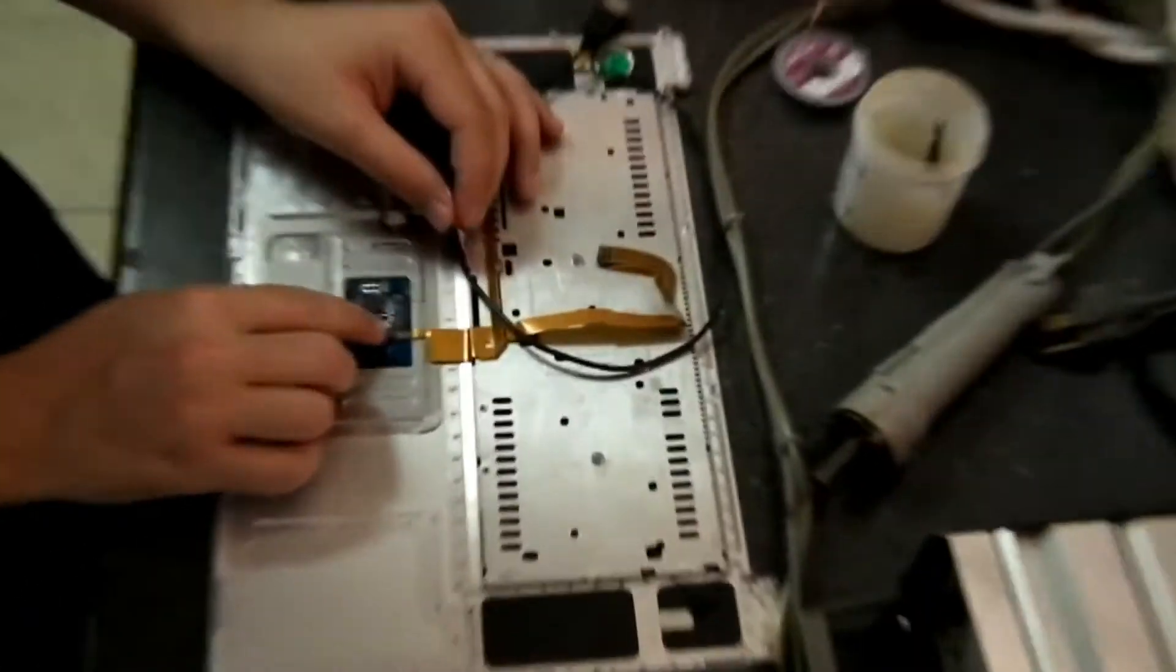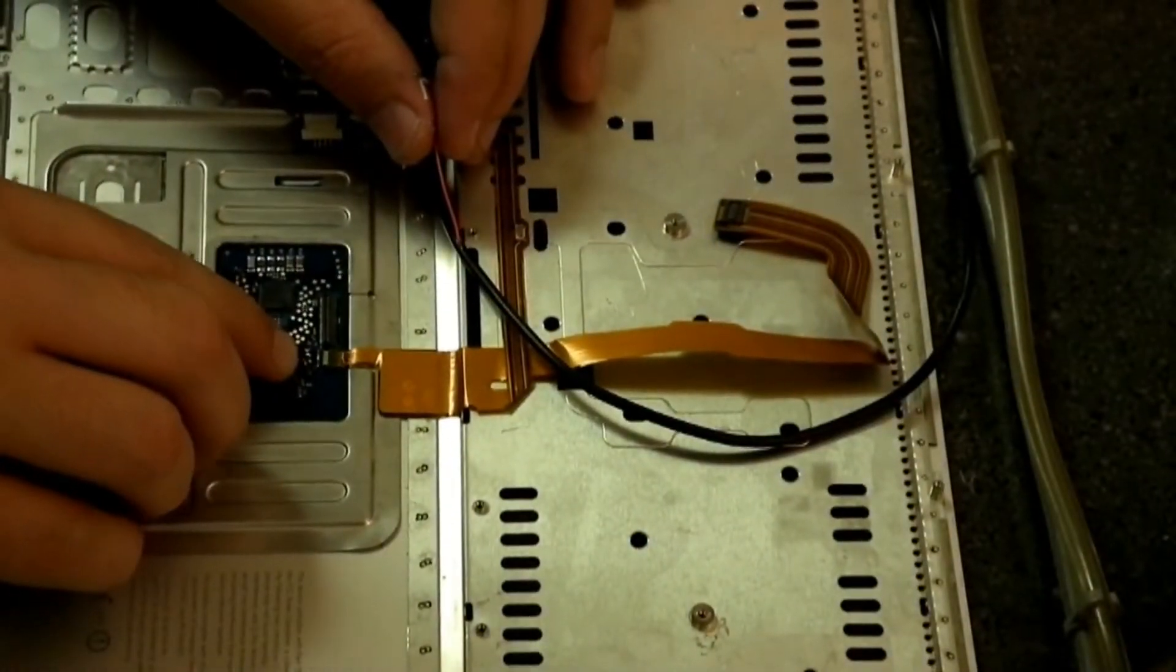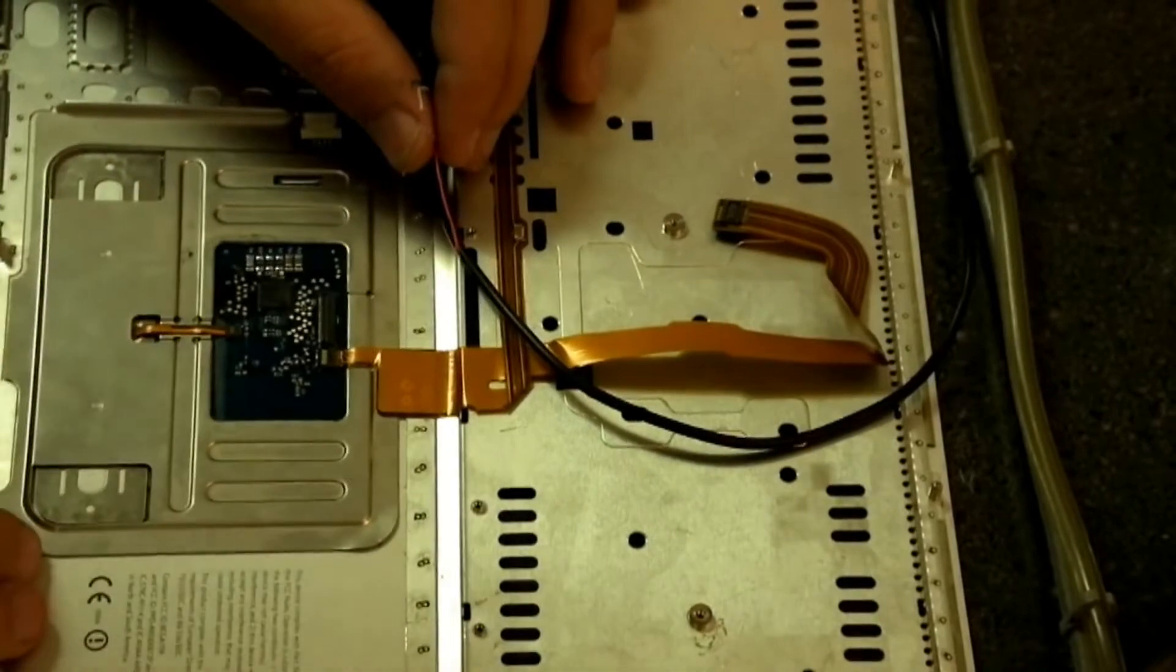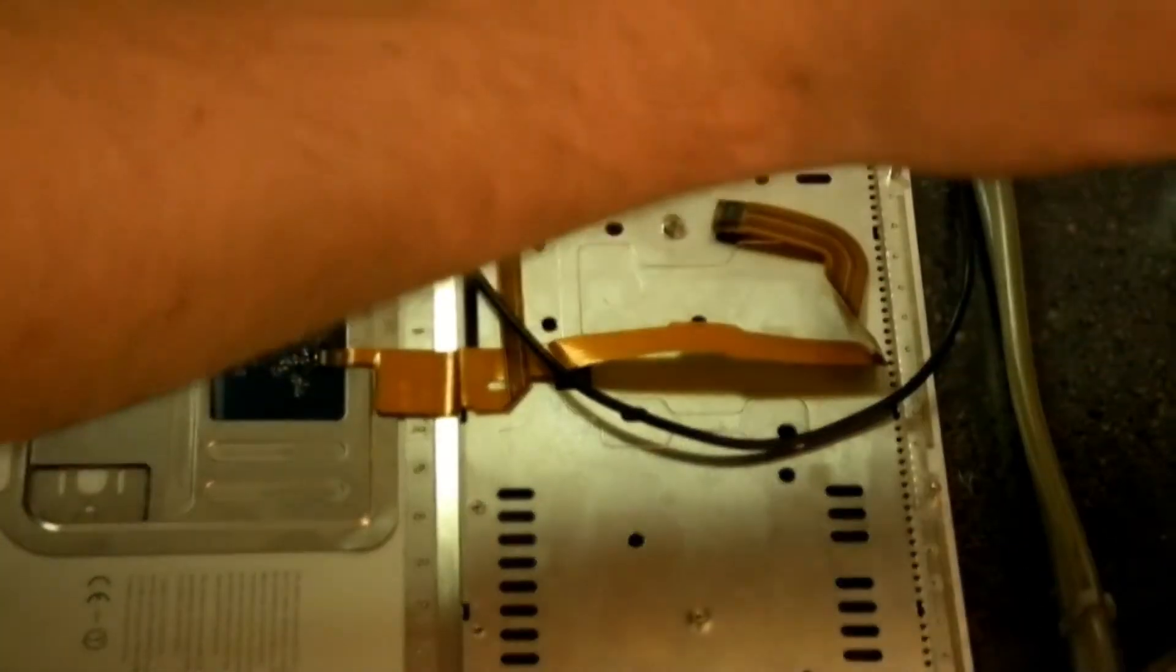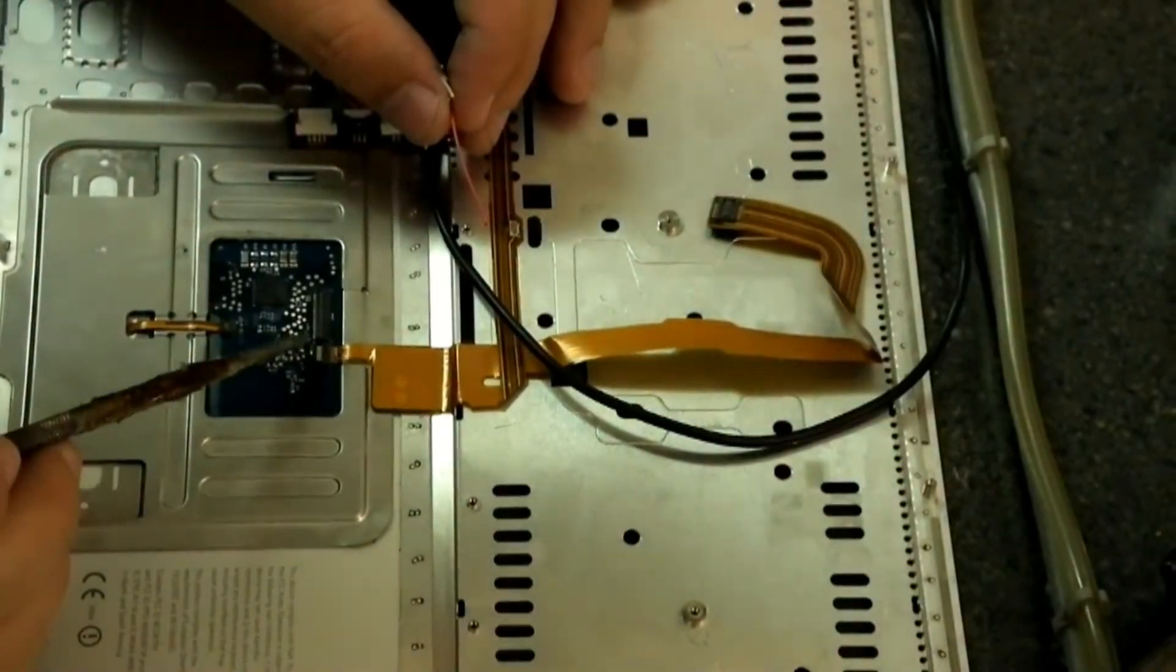First, you want to find your contact points. We have three here. You got positive, data negative, data positive, and ground. Add a little flux. Just a dab, won't be too much.